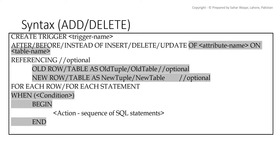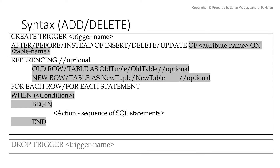For creating triggers, we type CREATE TRIGGER followed by the name of the trigger. On the next line we specify the timing — BEFORE or AFTER the event. We also have an INSTEAD OF option which will be discussed in coming lectures. After this, we specify the event: INSERT, UPDATE, or DELETE, along with the attribute name on which the update event is performed and the table name to which the attribute belongs. Then we type REFERENCING.